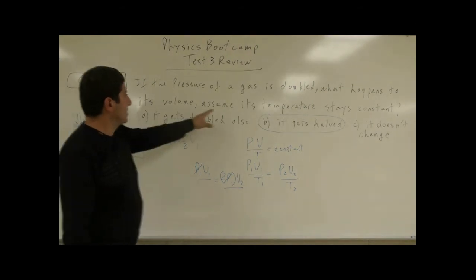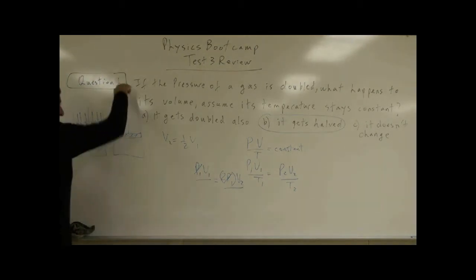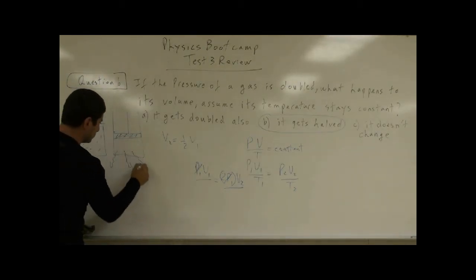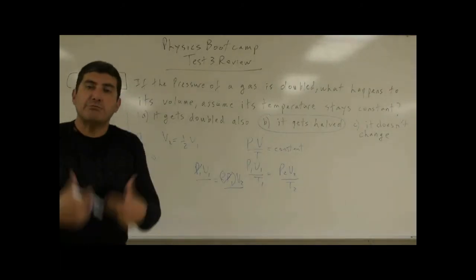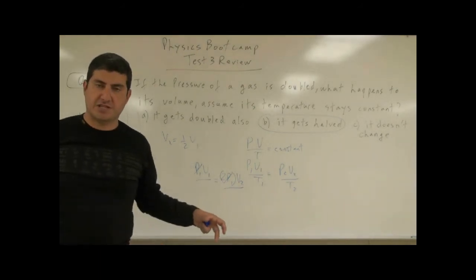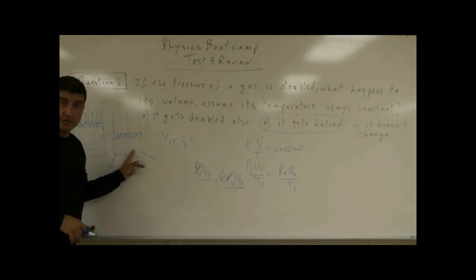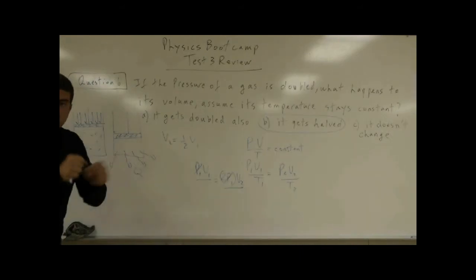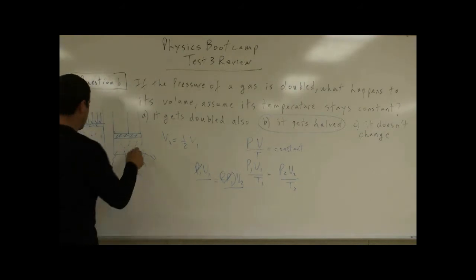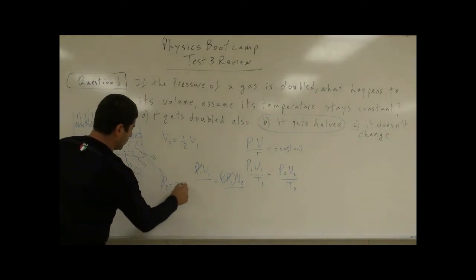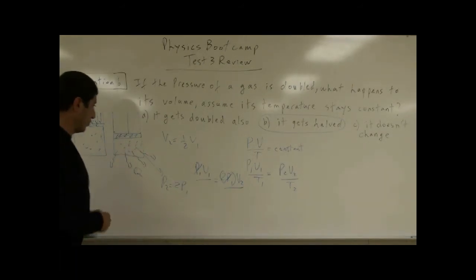In this case, however, the temperature stayed the same — this is known as an isothermal process. For the temperature to stay constant while pushing the piston in, heat must have escaped from the system. That heat escaping allowed the temperature to remain constant. Meanwhile, the pressure still goes up because the molecules hit the walls of the container more often in the smaller volume. So the volume goes down and P2 is double P1. We can draw a PV diagram of this.